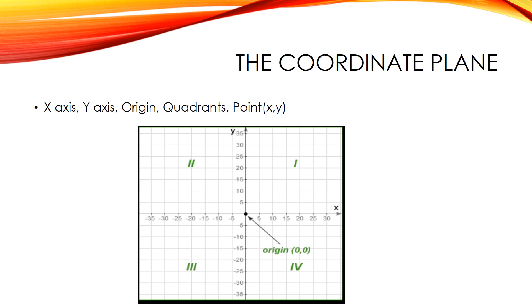It is called an ordered pair because the order of the two numbers matters. The first is always the X coordinate. The sign of the coordinate is important: a positive number means to go to the right (X) or up (Y); negative numbers mean to go left (X) or down (Y).